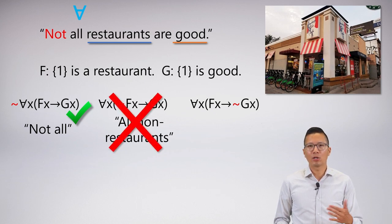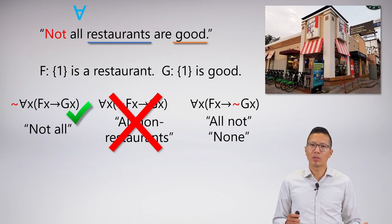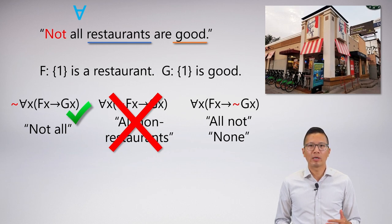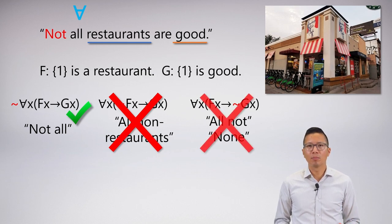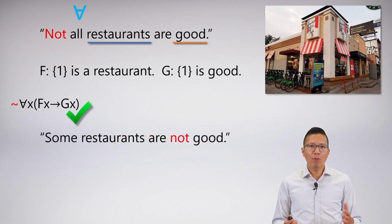What about the negation at the back? This says 'everything that is a restaurant is not good,' which is another way of saying 'none.' That's an important phrase, but it's not capturing the meaning we want here.